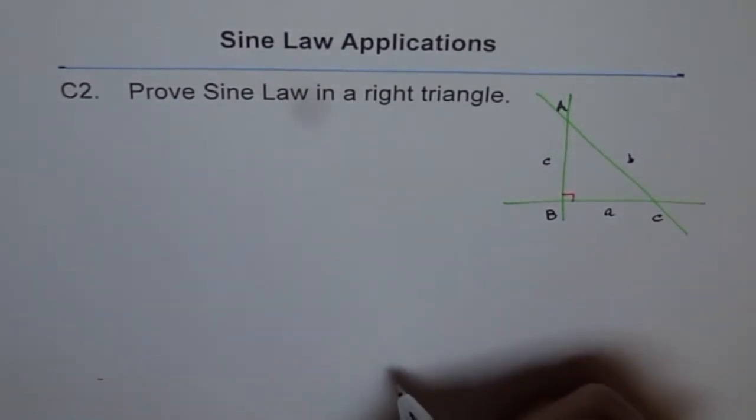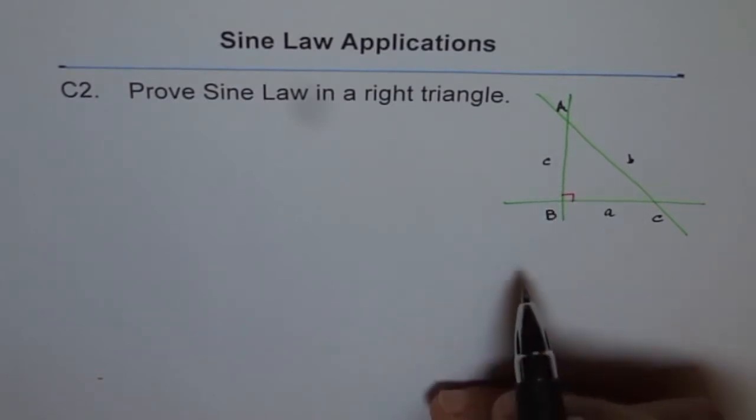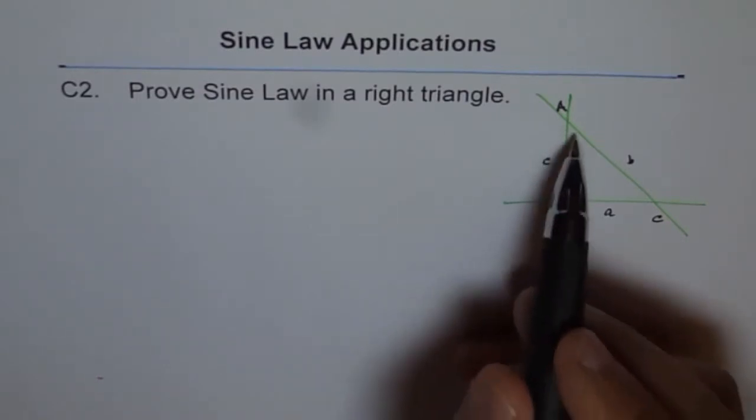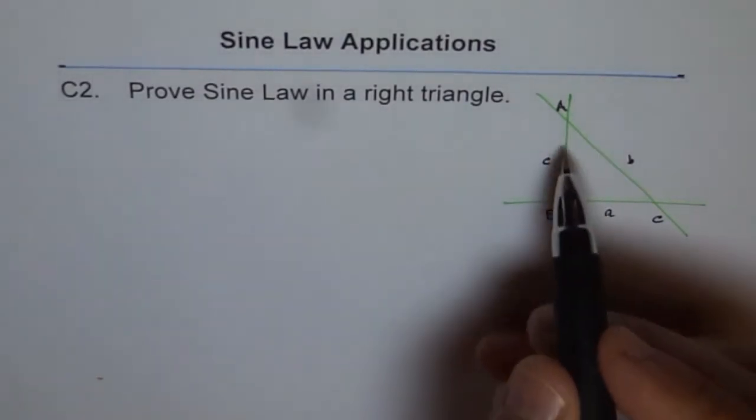The idea here is to show you that in this triangle, the basic trigonometric ratios are actually sine law. Let's see how.